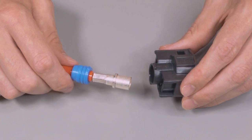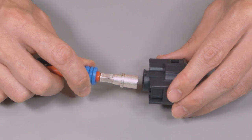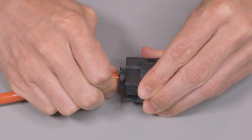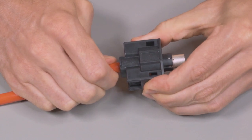While holding the wire seal in place, push the contact straight into the rear of the connector until you hear and feel a click. A slight tug will confirm that the contact is properly locked into place.